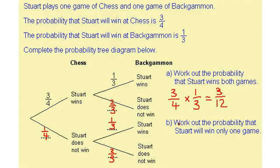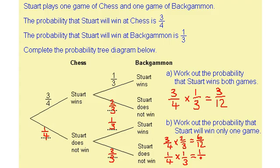I now need to work out the probability that Stuart will win only one game. To do this: if he wins chess, he must lose backgammon — that's three quarters multiplied by two thirds, which is six over twelve. Or if he loses chess, he must win backgammon — that's one quarter multiplied by one third, which is one over twelve.